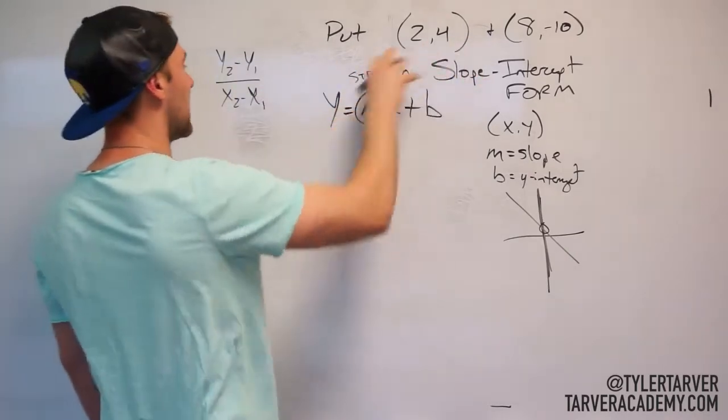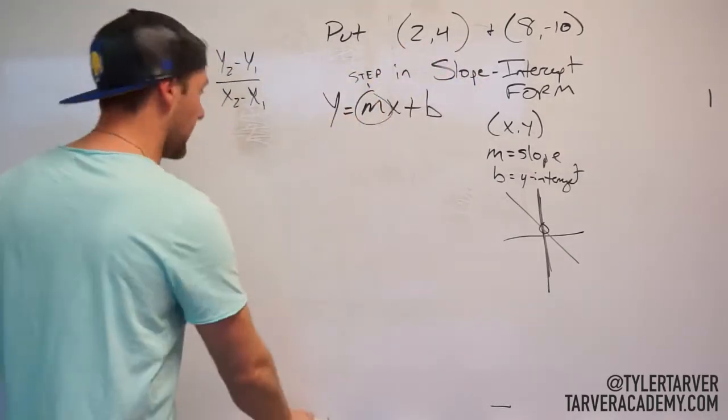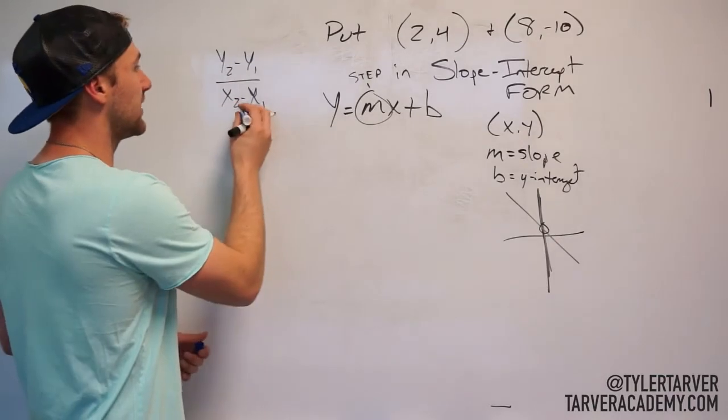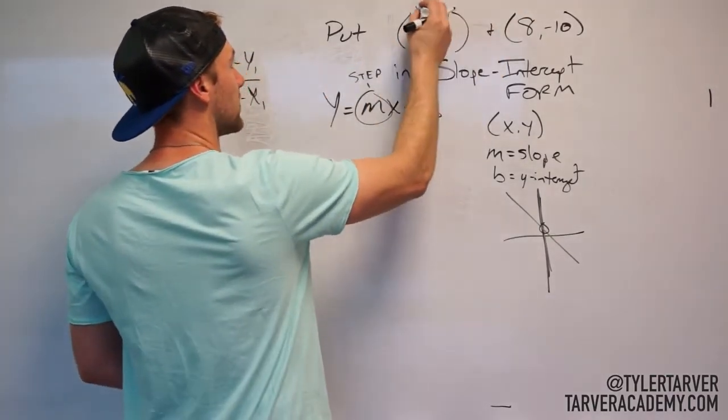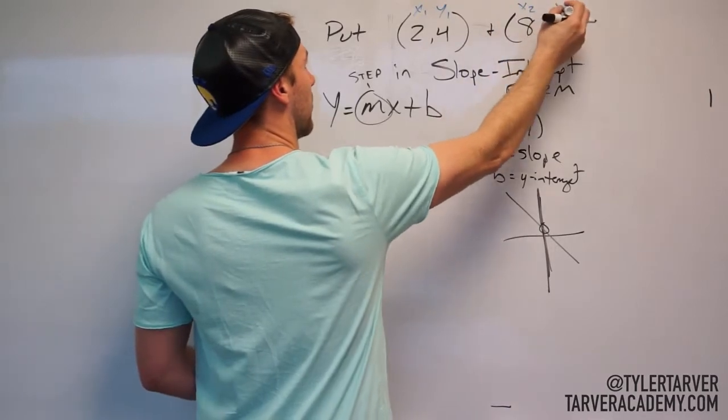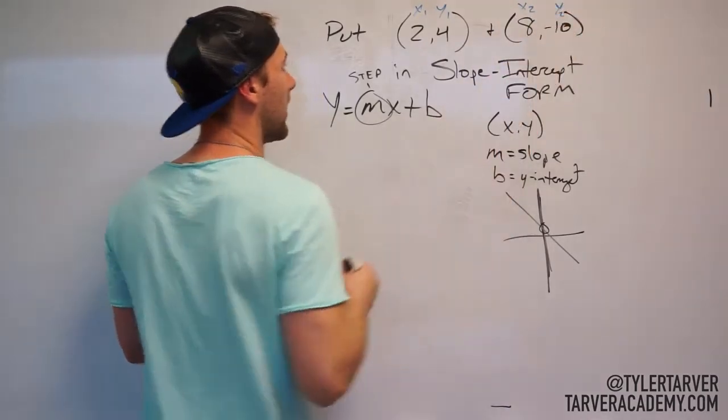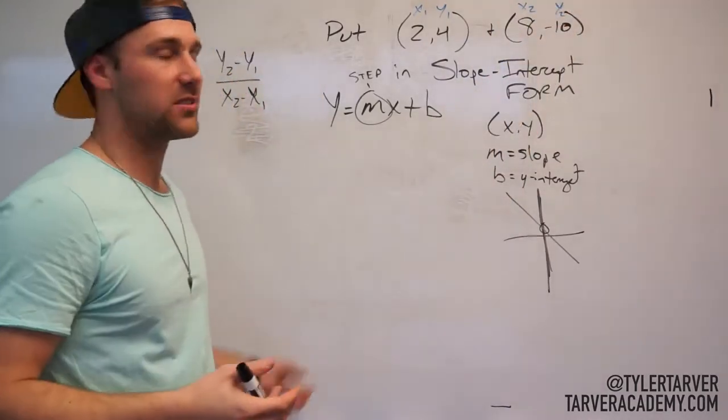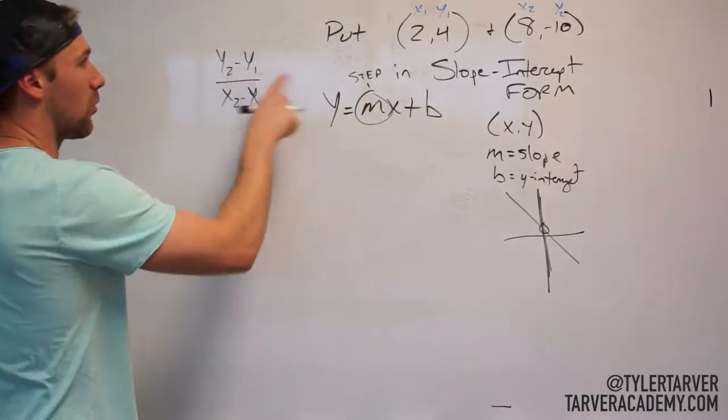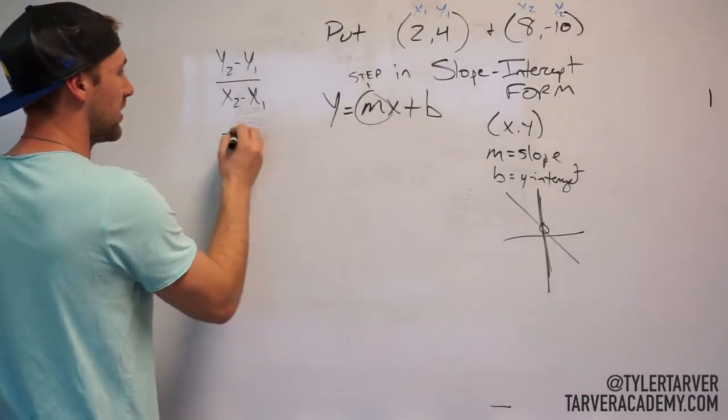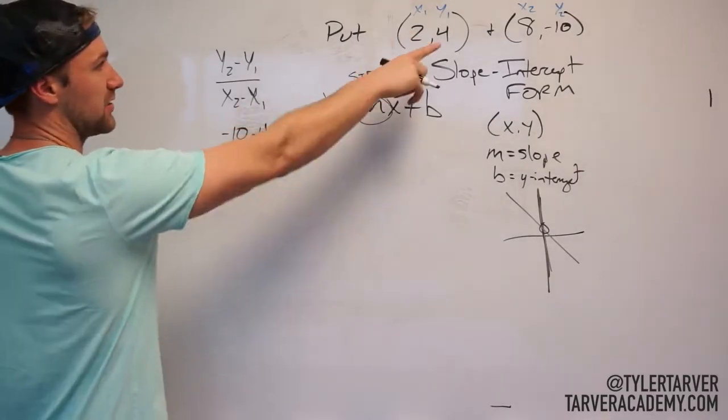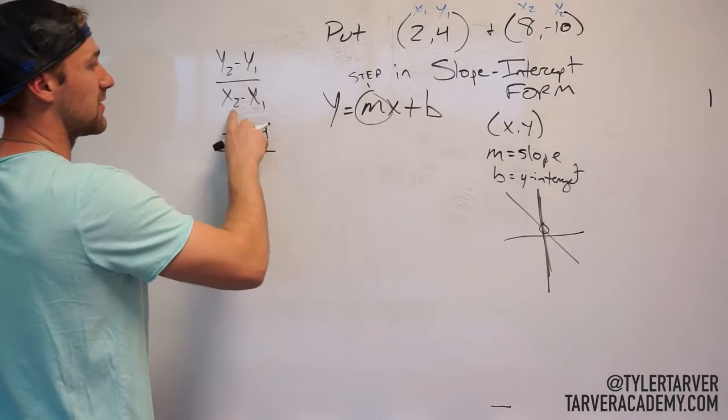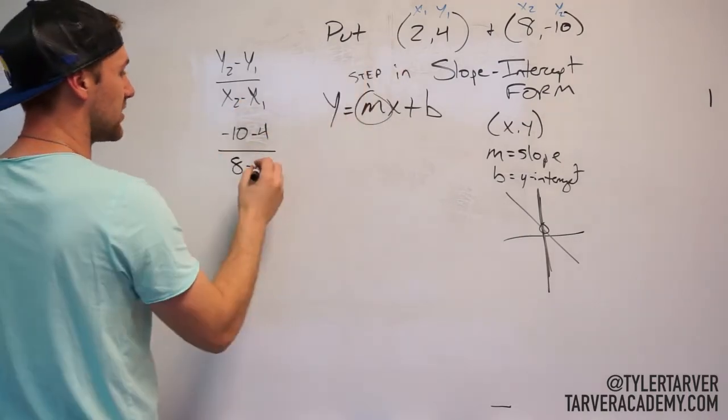Alright, so we label our stuff because I'm a big fan of labeling, so I think I've got another color. So we'll make this y2, so it'll be y1 and x1, and then x2 and y2, okay? Now that I've labeled that, I'm really just pulling these out and putting in what it's attached to. So our y2 I said is negative 10 minus our y1, which is 4. x2 is 8 minus our x1 is 2.